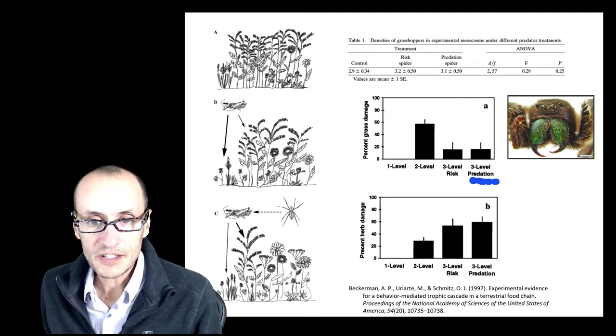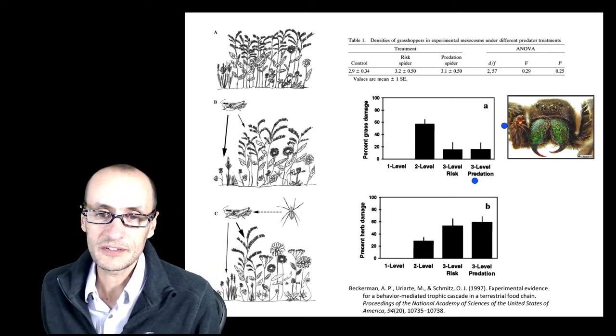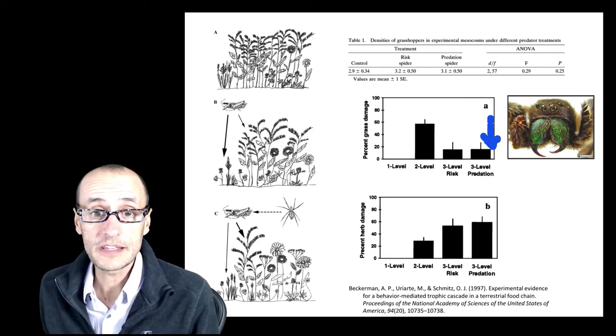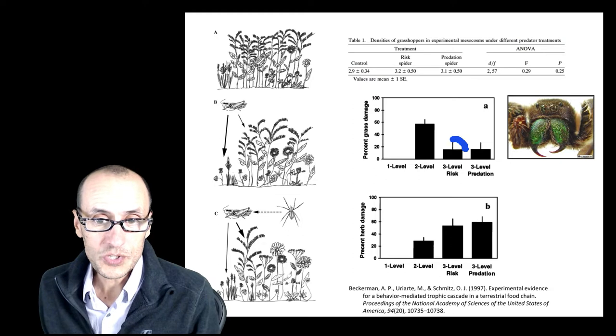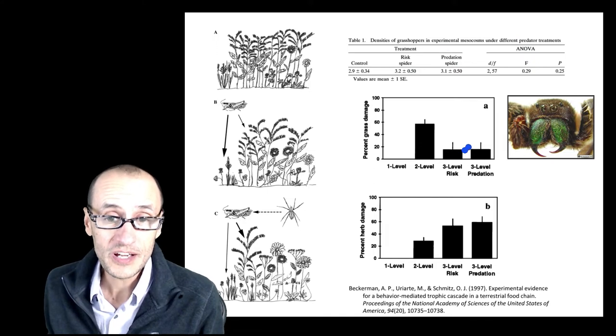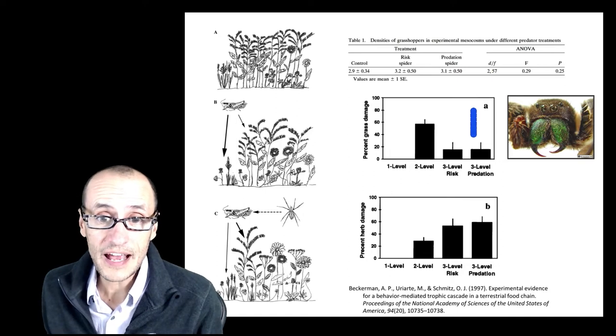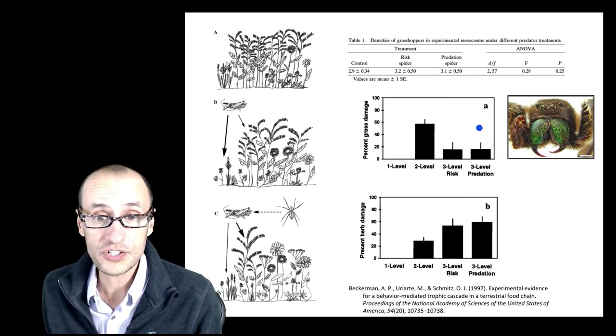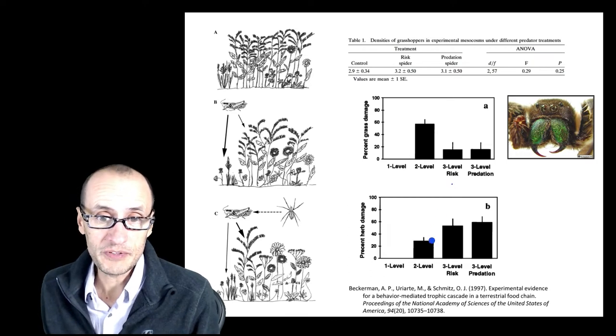When you add the spiders that actually are functional, that is, they can actually pierce and kill the grasshoppers, you see a decrease in the damage of the plants, of the grasses. And when you put the risk spiders only in there, the spiders that actually can't actually kill the herbivores, you see a decrease in the damage to the grasses to the same extent as you got when you actually have the actual predation spiders. So just the mere presence of the spiders has an effect on herbivory of the grasses.